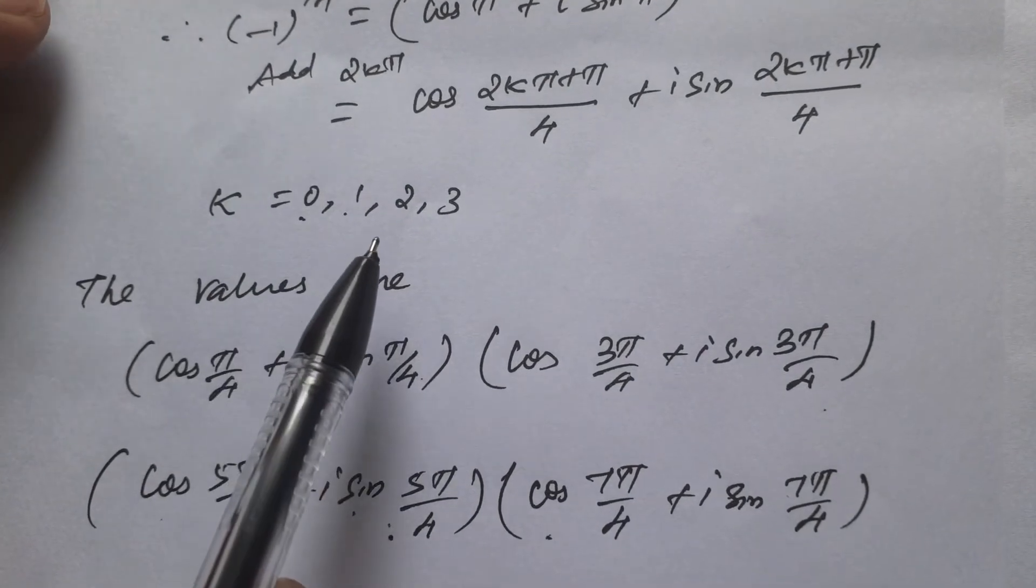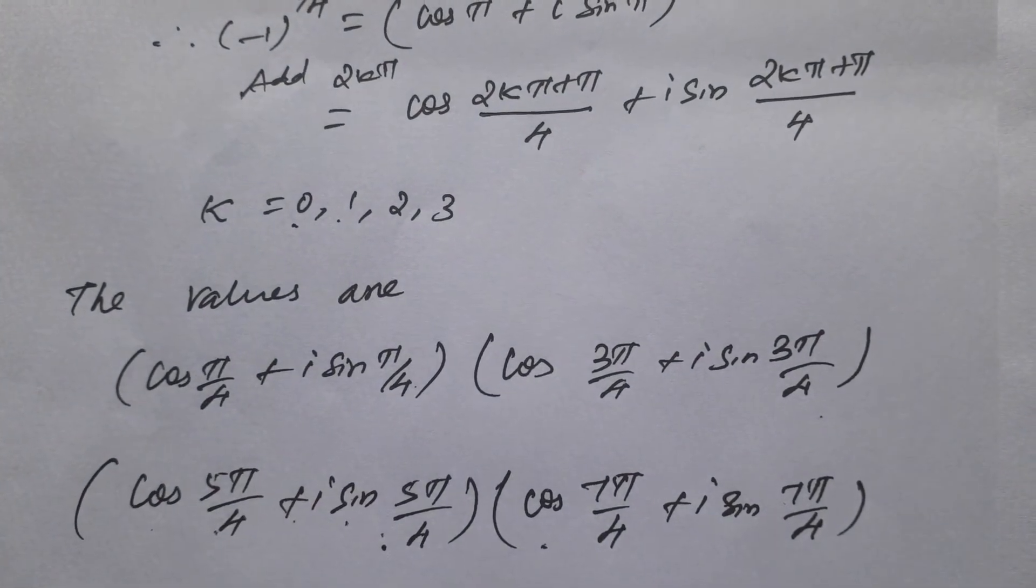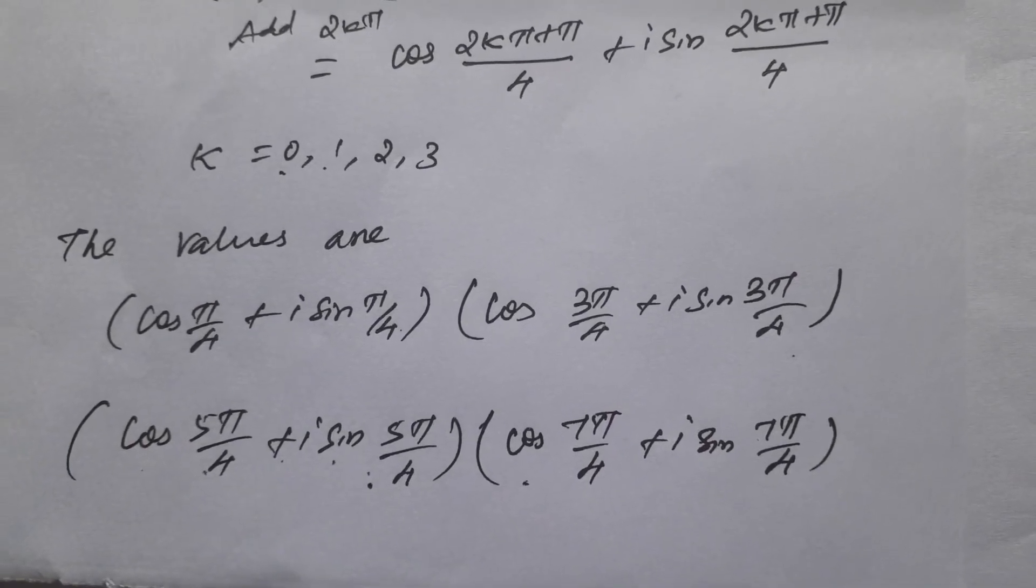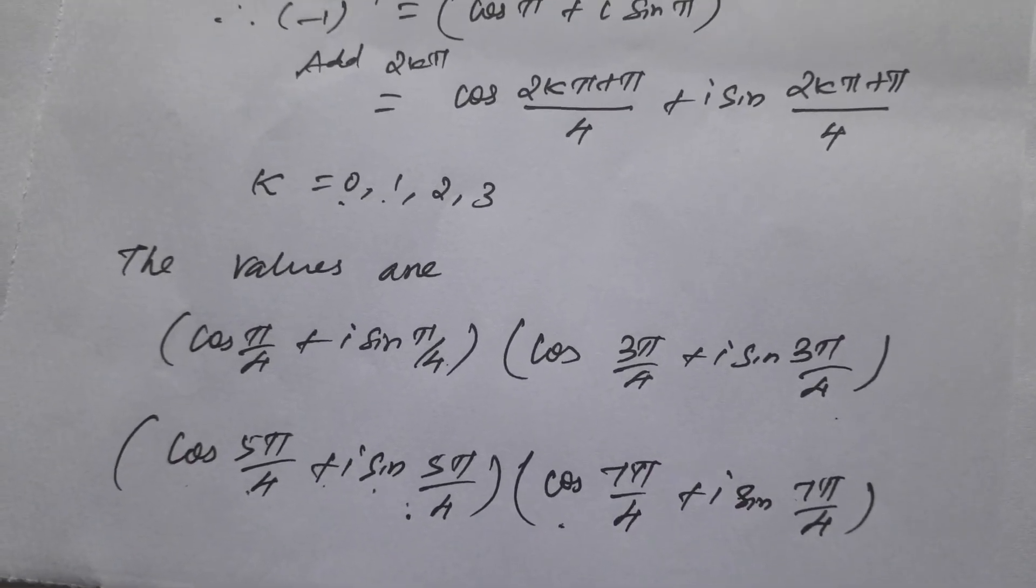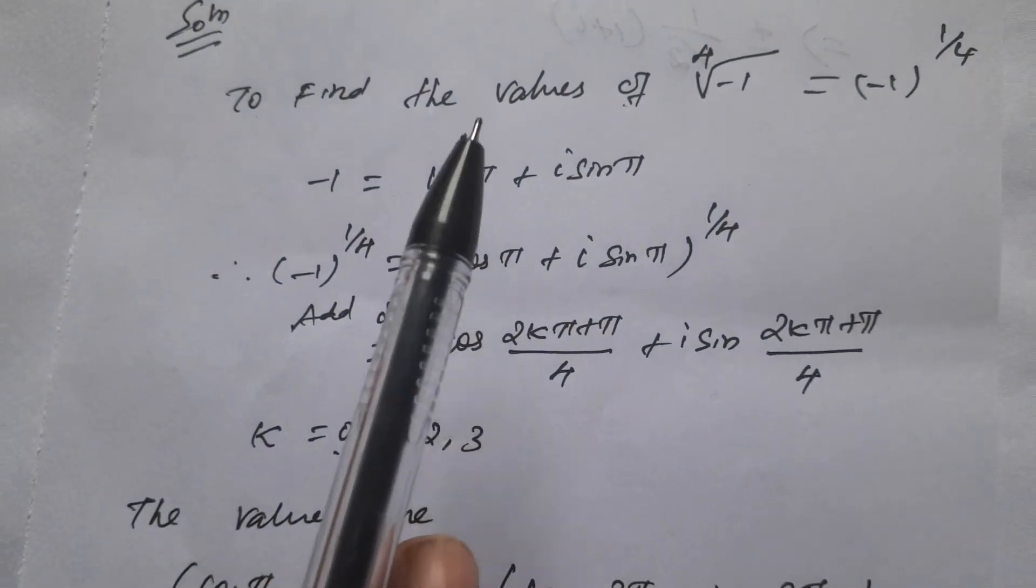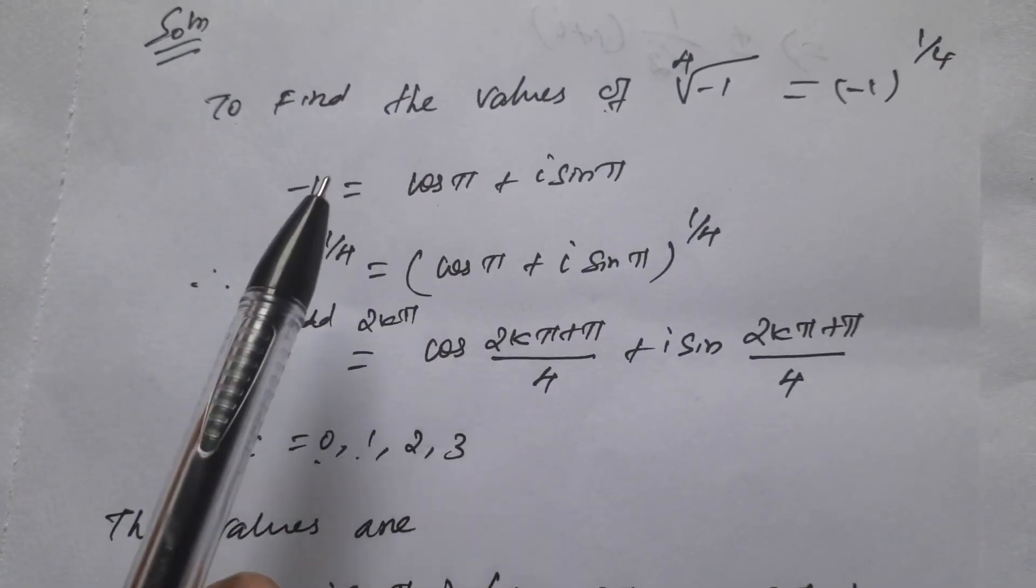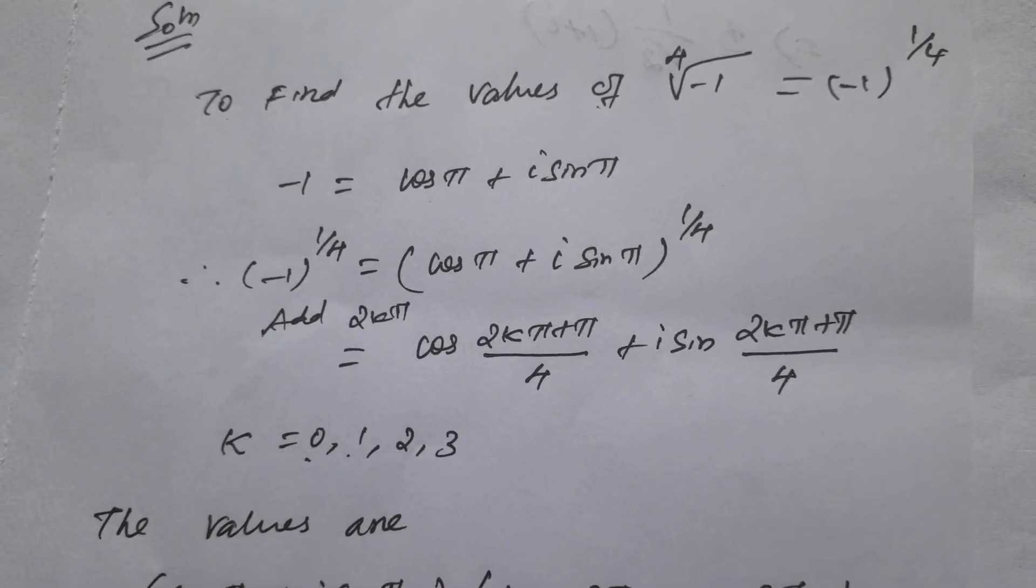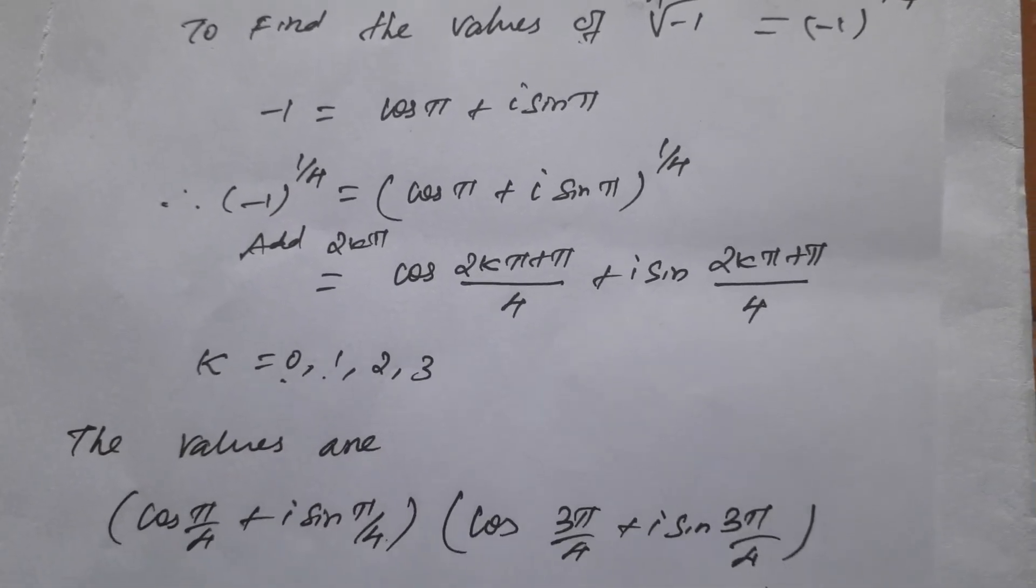So students, if you apply 0, 1, 2, 3, cos π value is minus 1, sin π value is 0. So now minus 1, okay students. So now how to prove that.